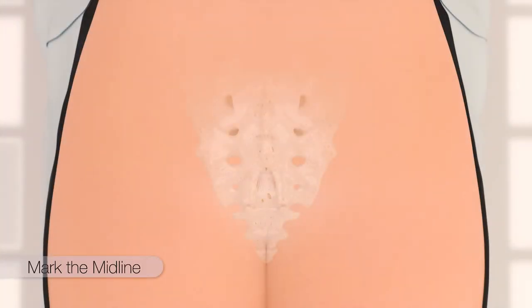After prepping and draping the sacral area, the patient's midline is marked by identifying the spinous process. The level of S3 is identified by palpating the tip of the coccyx and measuring 9 cm cephalad. This is marked with a transverse line. The needle entry points are marked by measuring 2 cm lateral and 2 cm cephalad on both sides.